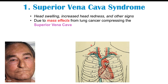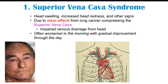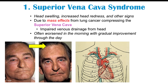If a tumor or mass from the lung cancer compresses the superior vena cava, it causes a backup of blood upward, leading to swelling and redness of the head — essentially impaired venous drainage. Notably, this worsens in the morning after lying down all night, causing a more swollen face, and improves throughout the day as fluid clears when the patient is upright.